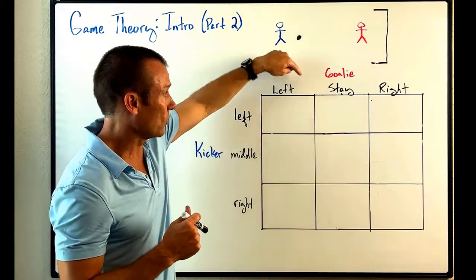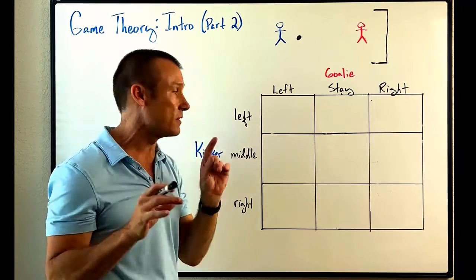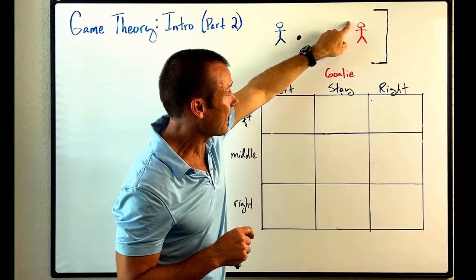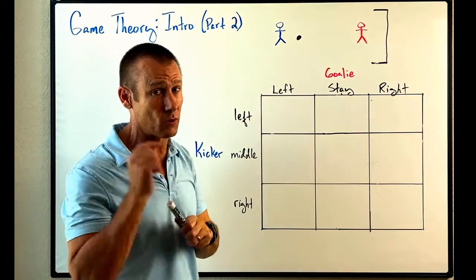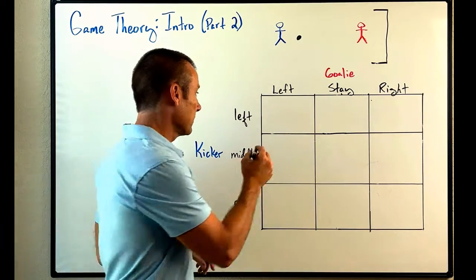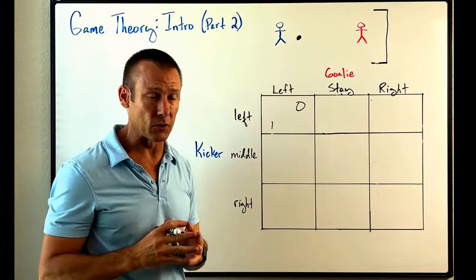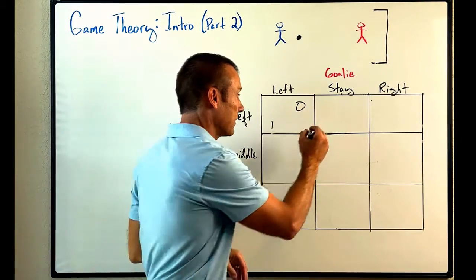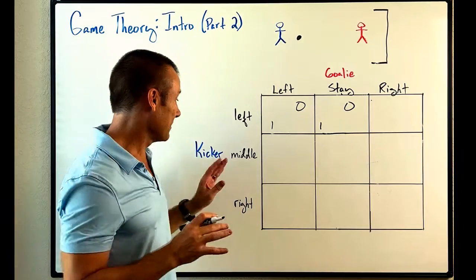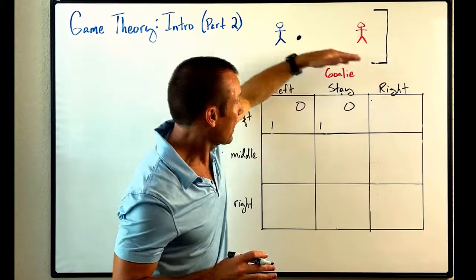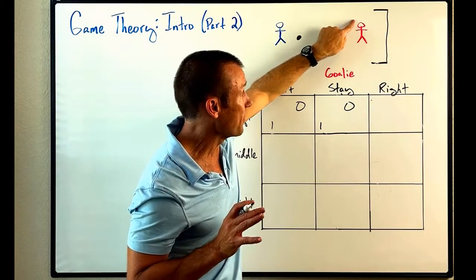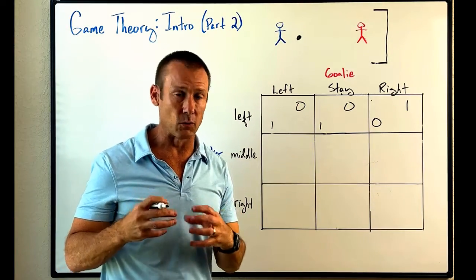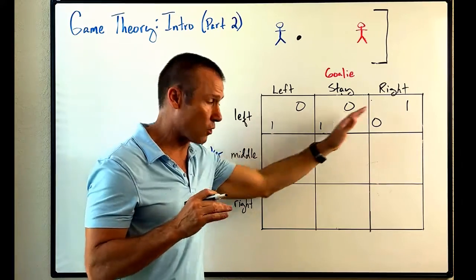Let's fill it out. Kicker kicks left, goalie jumps left — these strategies are from each player's perspective, so if the goalie jumps to their left, the ball goes into the back of the net: kicker gets the point, nothing for the goalie. Kicker kicks left, goalie stays middle — ball still goes to the back of the net: kicker gets the point, nothing for the goalie. Kicker kicks left, goalie jumps right — the goalie gets the util, kicker gets nothing. That's the first row filled out.